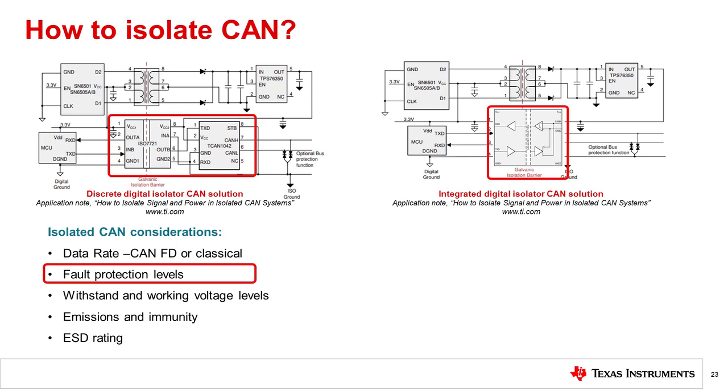Bus fault protection. Higher bus fault protection prevents damage when high voltage is applied to bus pins. Withstand and working voltage levels. End equipment that operates in the presence of higher voltages requires higher withstand voltage and higher working voltage to ensure reliable system protection over the equipment lifetime. Emissions and immunity for signal integrity. Low emissions and high immunity help to maintain signal integrity and compliance to industry standards for automotive and industrial applications.